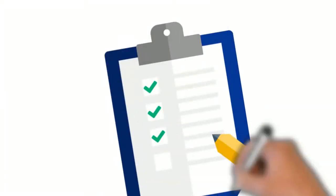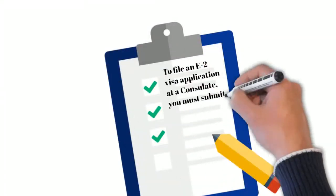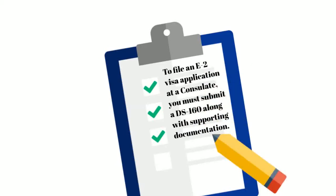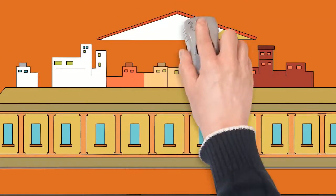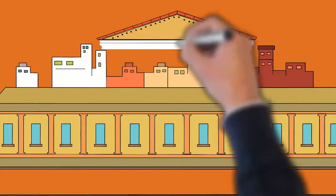To file an E-2 visa application at a consulate, you must submit a DS-160 along with supporting documentation. The consulate will review the information submitted, and once ready, you can schedule a visa interview. In many instances, the E-2 visa interview may take several months to materialize.